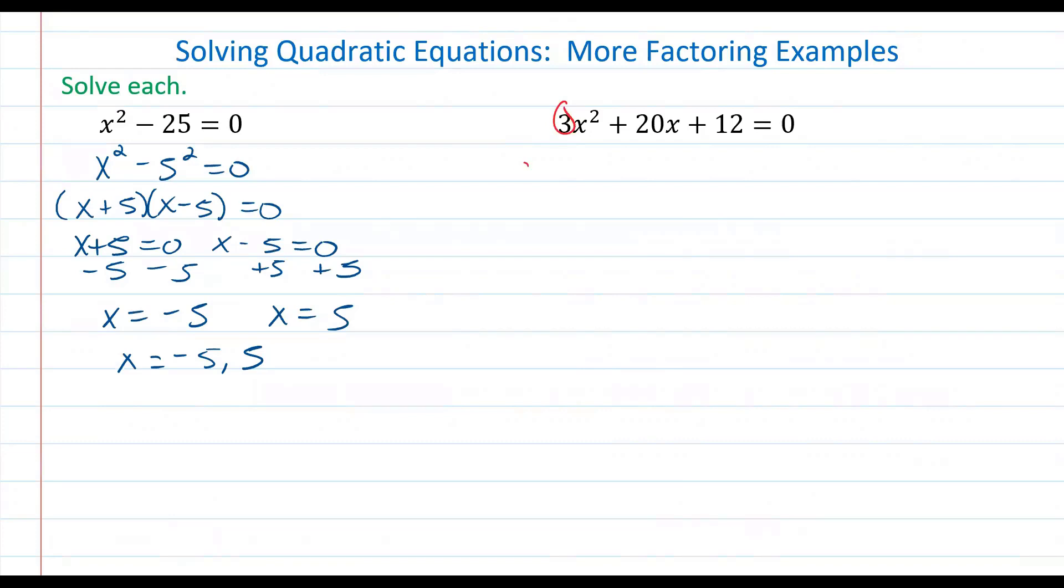The first thing you'll want to do is multiply a times c. In other words, find the product of a and c. So a is three and c is 12. This is three times 12 which is equal to 36.